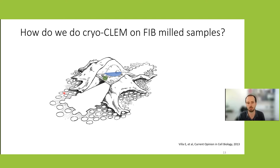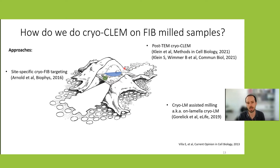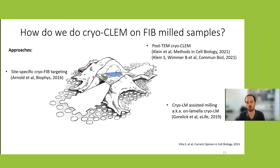There are three approaches for correlating lamellae. The first, developed in 2016 in Baumeister's group, is site-specific cryo-FIB targeting, which uses beads as fiducial markers visible in both light and SEM microscopy to target exactly where the fluorescent area is. The second approach correlates fluorescence after EM acquisition — called post-EM CLEM. The third uses cryo-LM integrated directly into the cryo-FIB microscope. Before discussing these methods we need to cover cryo-light microscopy, as it is inherent to all of them.